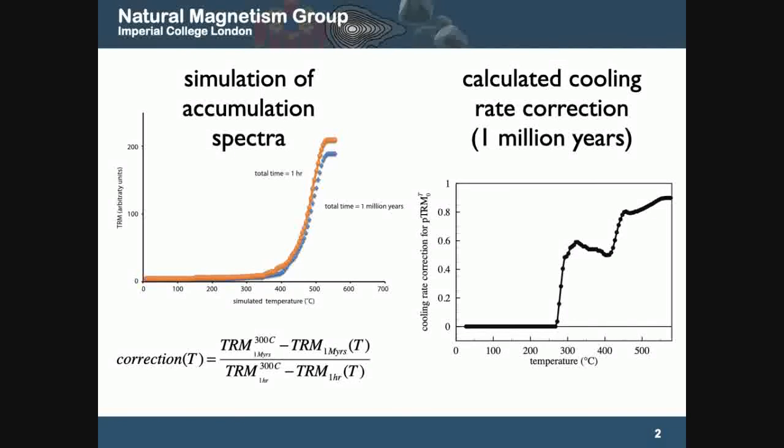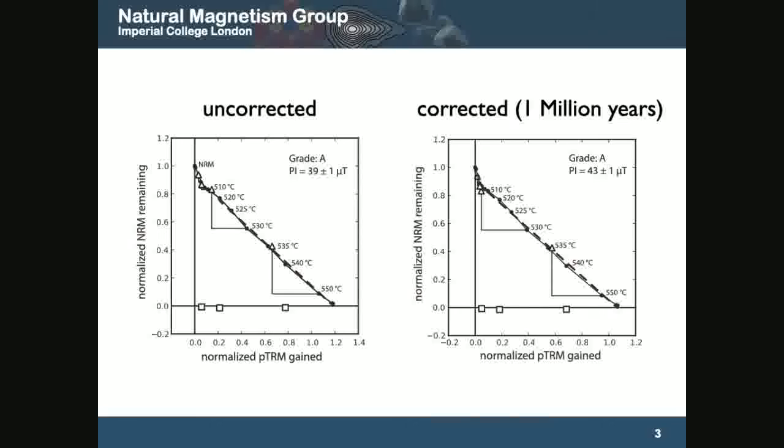How this works is we look at the blocking and unblocking spectra as a function of temperature. You can model which allows us to calculate a correction as a function of cooling rate. This is the graph on the right there. Then we take the Arai plot data, so on the left we have an uncorrected curve. For every single point we recalculate that position, the effect of cooling rate on that individual point.